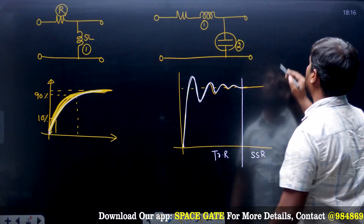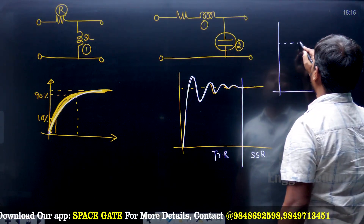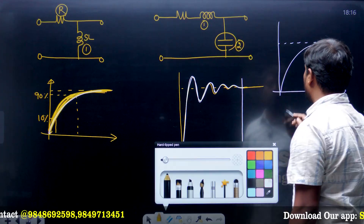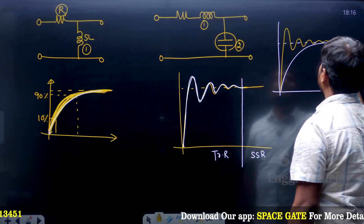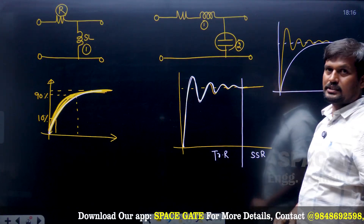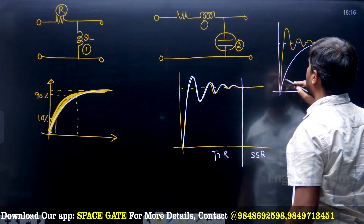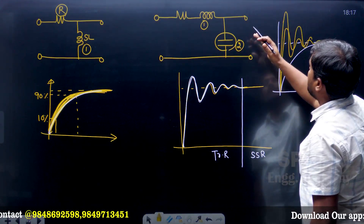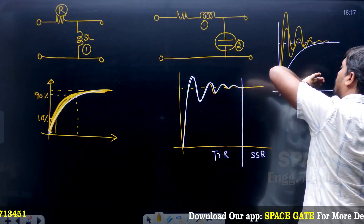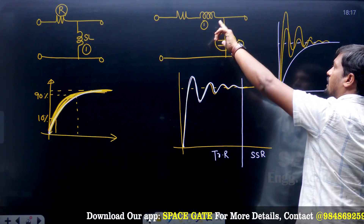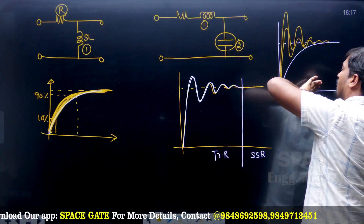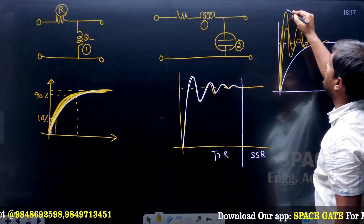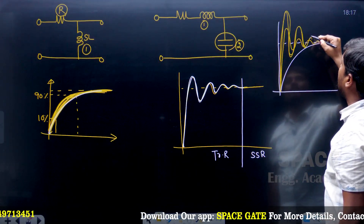If you observe the waveforms clearly: for the first-order system this will be the response, and for the second-order system I am going to draw it in yellow color. When the order of the system is further increased — suppose if there are three transient elements — the waveform moves towards the y-axis rather than the x-axis. When the order of the system increases, the waveform moves towards the y-axis, and automatically its peak is increasing.